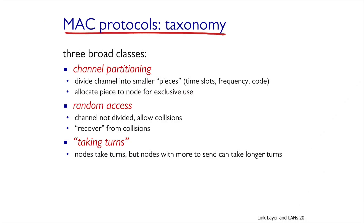Let's look at the classification of MAC protocols that manage broadcast links. There are three main classes. The first class divides the links into pieces according to time slots, frequency, and so on, and every piece is allocated to a specific node exclusively. Therefore, in this type of MAC protocol, collisions cannot happen. The second class of MAC protocols is Random Access Protocols. In this case, the link is not divided, so collisions can happen and a collision recovery mechanism is required.